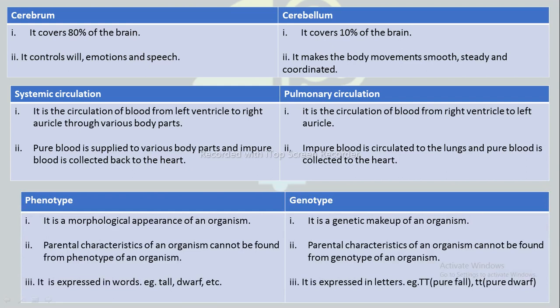The next difference is between phenotype and genotype. Phenotype is the morphological or physical appearance of an organism, whereas genotype is the genetic makeup of an organism. Parental characteristics of an organism cannot be found from the phenotype, whereas they can be found from the genotype. Phenotype is expressed in words — for example, tall or dwarf — whereas genotype is expressed in letters, for example, TT for pure tall and tt for pure dwarf.